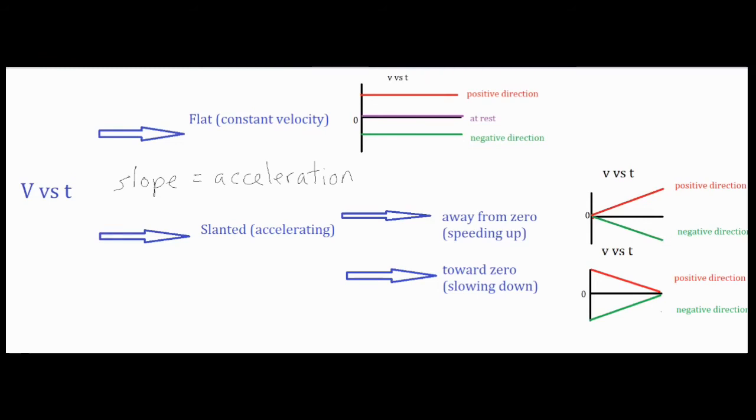Remember, negative just shows the direction, so negative five isn't smaller than negative four in the sense of velocity. It just shows that it's going five meters per second in the other direction, but it is greater than four.